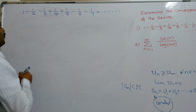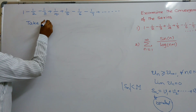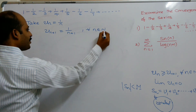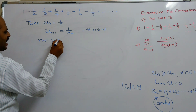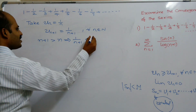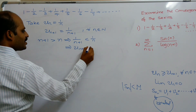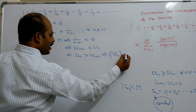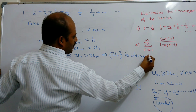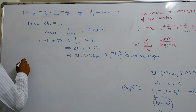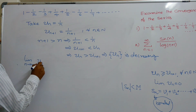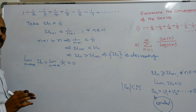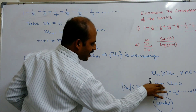Take UN equals 1/N. Then UN plus 1 equals 1/(N+1). Since N+1 is greater than N, we have 1/(N+1) less than 1/N, which implies UN plus 1 is less than UN — so the sequence UN is decreasing. Also, the limit as N tends to infinity of UN equals the limit of 1/N, which is clearly 0. So the first property of the Dirichlet test is verified.